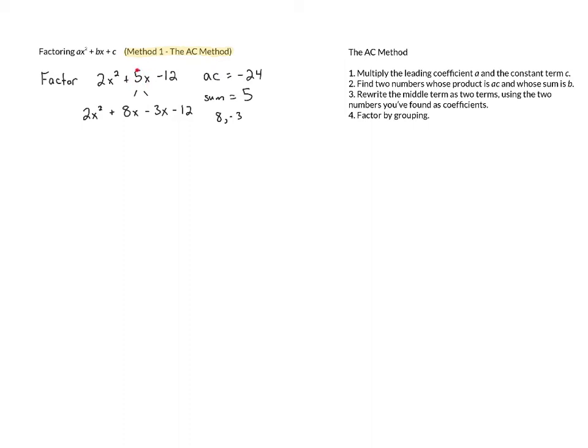So what we've done is we've taken 5x and rewritten it as 8x minus 3x, and we know that 8x minus 3x is equal to 5x, so those are equivalent. And why is this helpful?